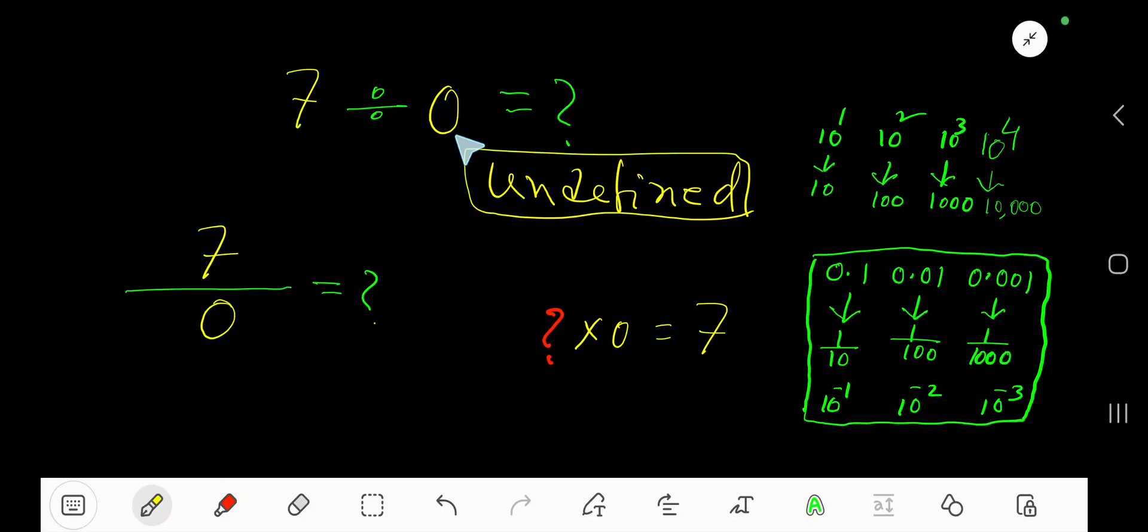7 divided by 0 equals what? The answer is undefined. For every division statement, we have a related multiplication statement. This is the dividend, this is the divisor.